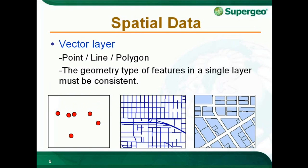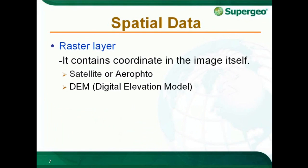Vector models are useful for representation of the world by points, lines, and polygons. Each layer must be consistent by the type of features. Raster is an image storage — it stores data by cell and can be easy to visualize and to describe continuous fields.